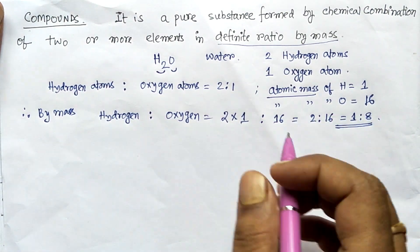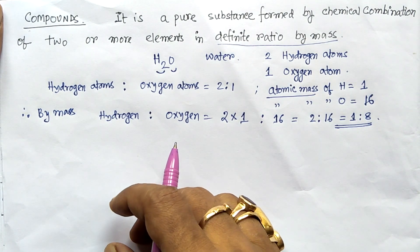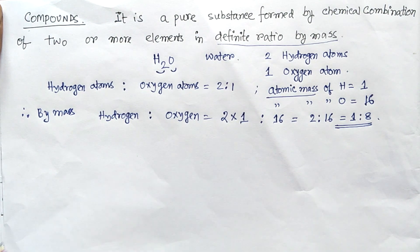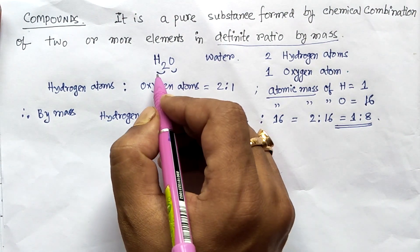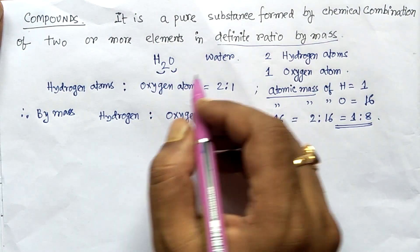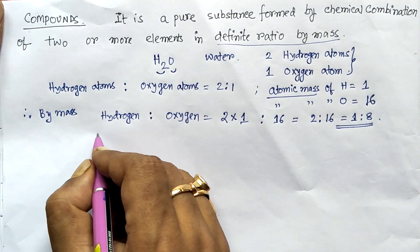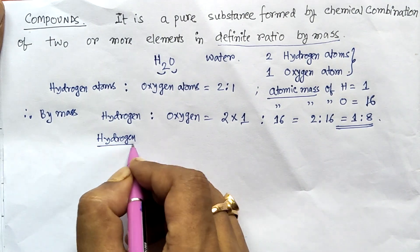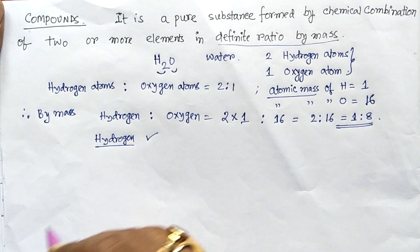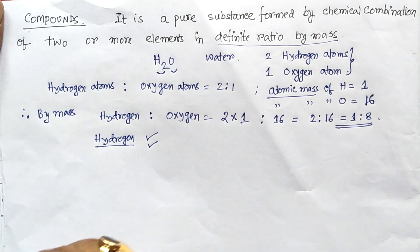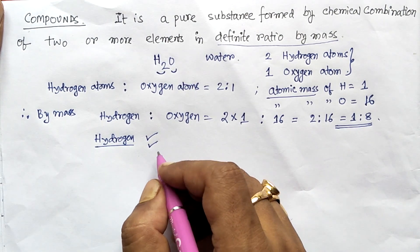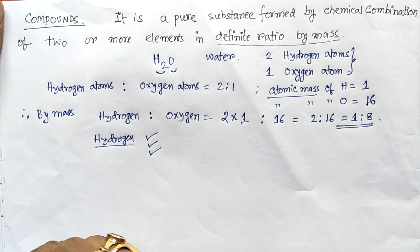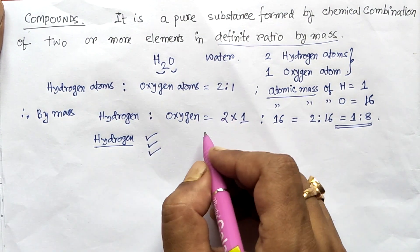In a compound, the original properties of the constituents are lost and a substance with new properties is formed. Since water contains hydrogen and oxygen, consider the properties of hydrogen: it is inflammable and combustible — it catches fire readily and burns with a bluish flame.